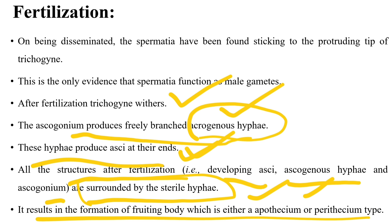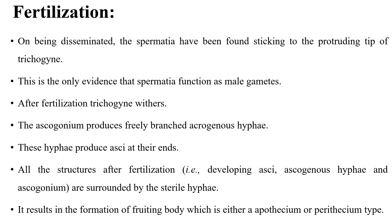All structures developing after fertilization are surrounded by sterile hyphae, resulting in the formation of a fruiting body — either an apothecium or a perithecium. Both apothecium and perithecium are fruiting bodies of the lichen that develop after fertilization. After the spermatia fuse with the trichogyne, the trichogyne disappears, the ascogonium produces freely branched ascogenous hyphae, and together all these structures form the fruiting body.